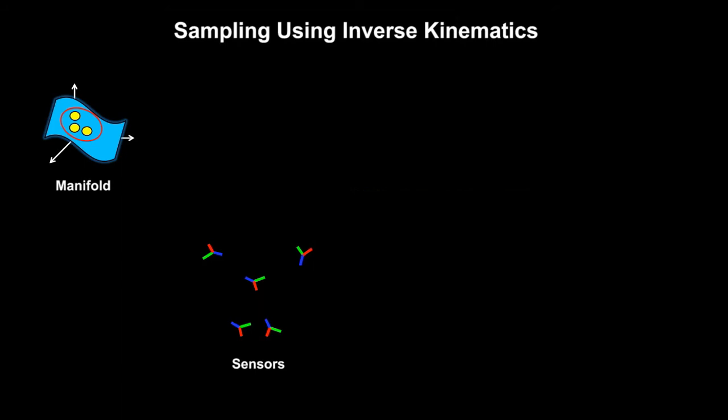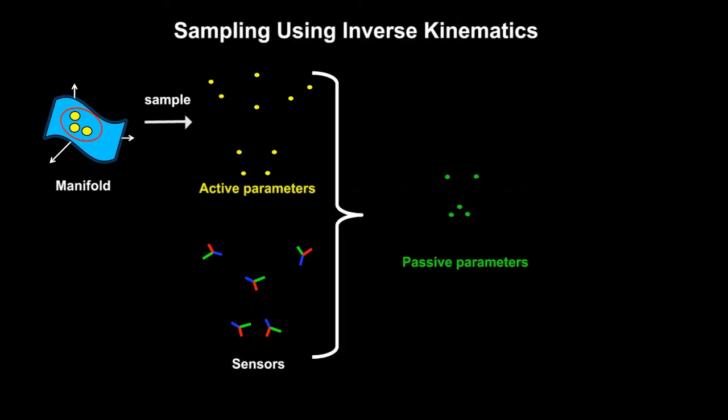To generate a hypothesis, the set of active parameters is sampled from the manifold. Using inverse kinematics, the passive parameters are estimated as a function of the active parameters and the sensor orientations. By doing this, the full pose is reconstructed.